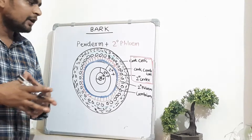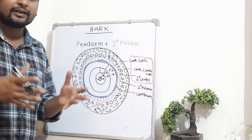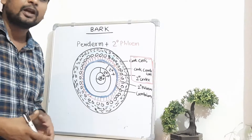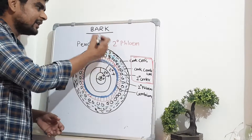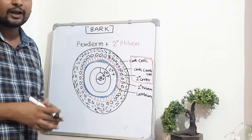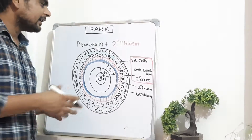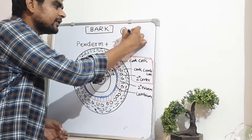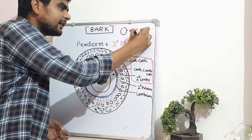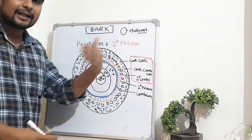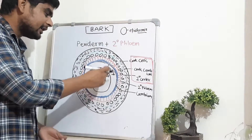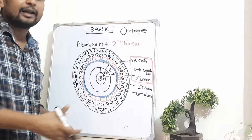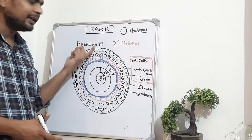In plants which undergo secondary growth, the outermost layer of the stem and root is referred to as epidermis during primary growth. But when secondary growth initiates, a new secondary epidermis forms — particularly the periderm — due to the activity of the vascular cambium.